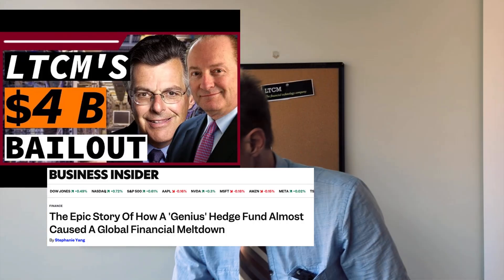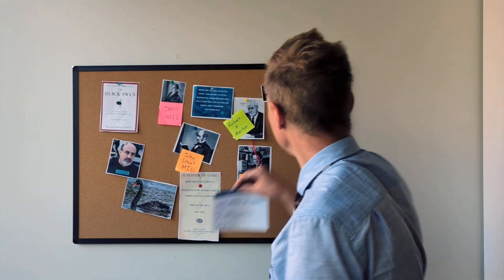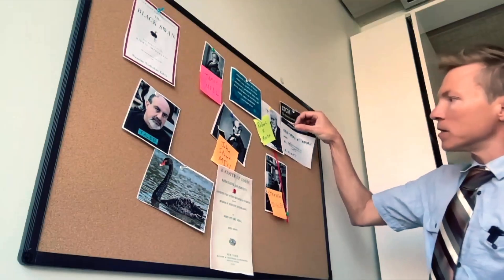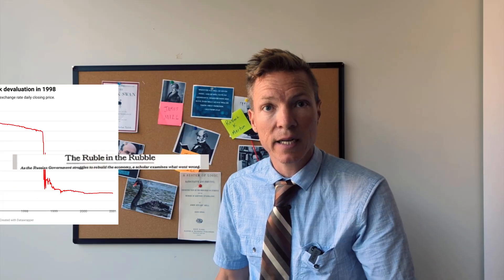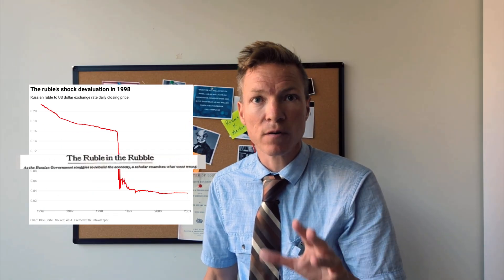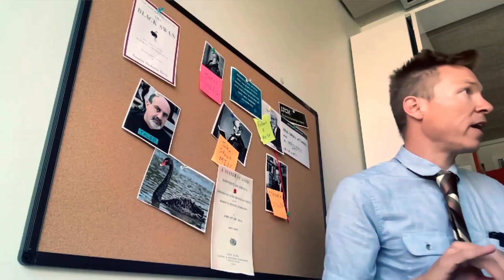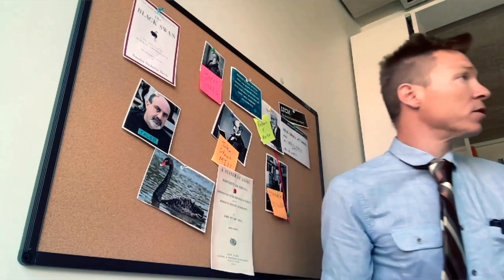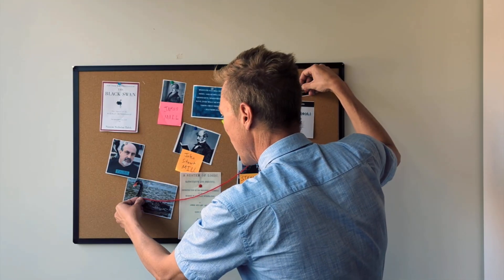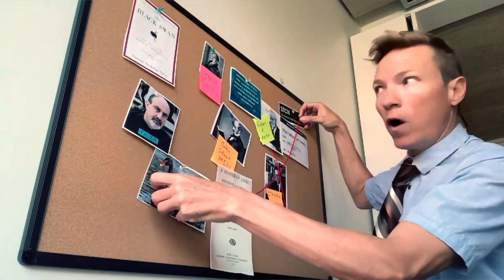What went wrong? Well, the hedge fund was using a Nobel Prize-winning model, but the model assumed stable volatility. And in 1998, Russia defaulted on its debt, setting off a chain reaction, creating hyper volatility — an event that the model assumed was impossible. A black swan.